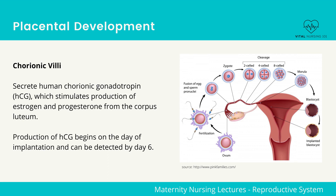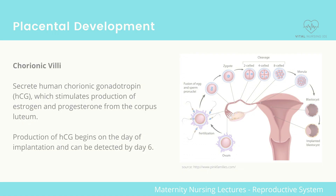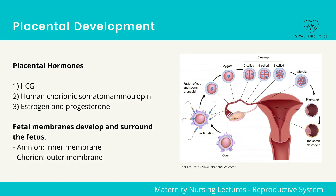The production of HCG begins on the day of implantation. The placental hormones you should be familiar with include: HCG, human chorionic somatomammotropin — note that this acts as a growth hormone and insulin antagonist — estrogen, and progesterone.